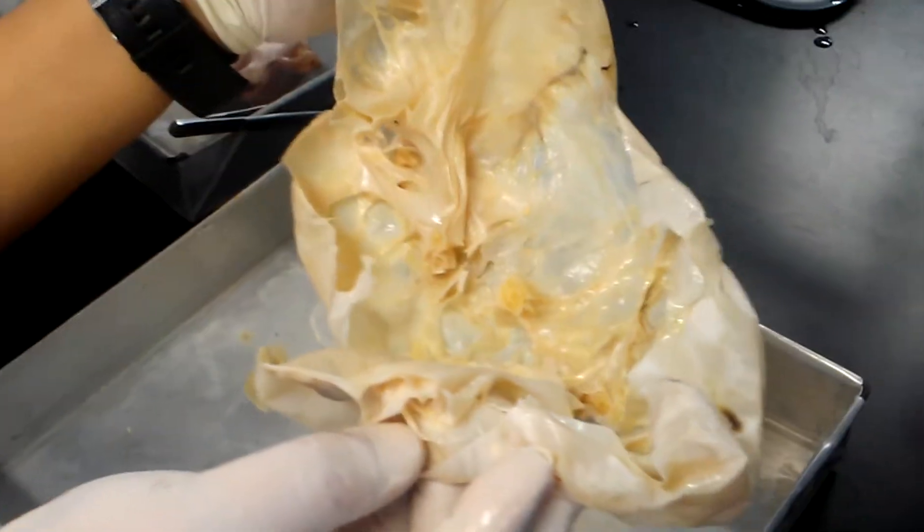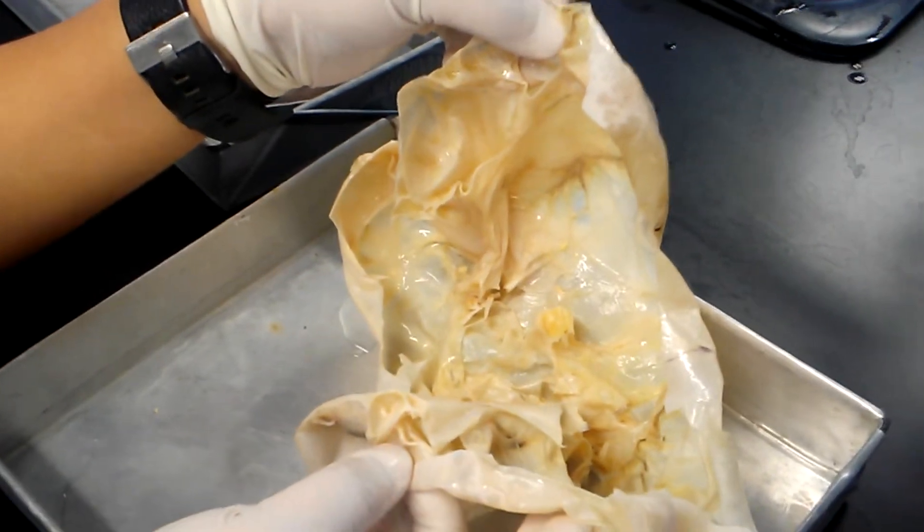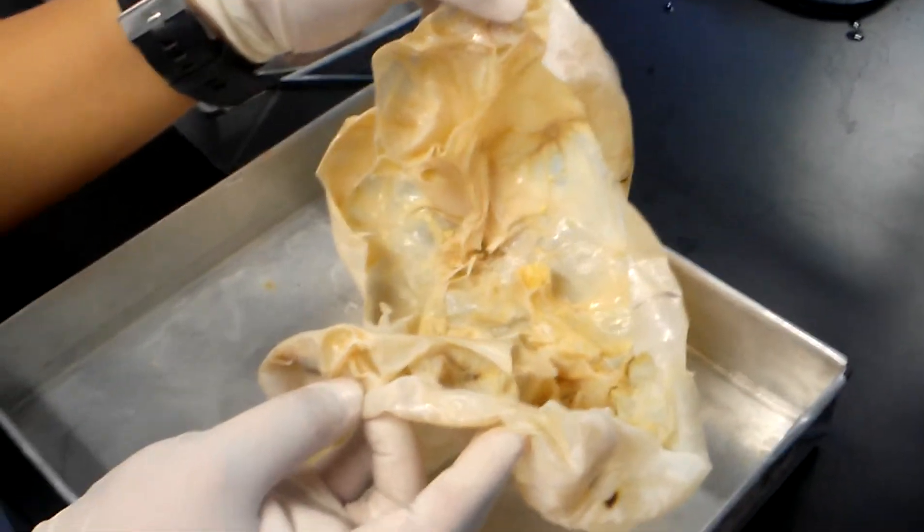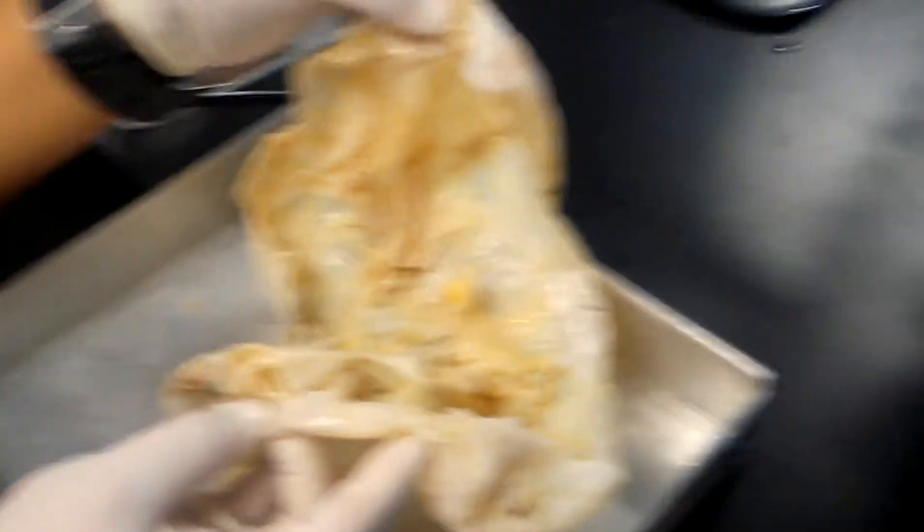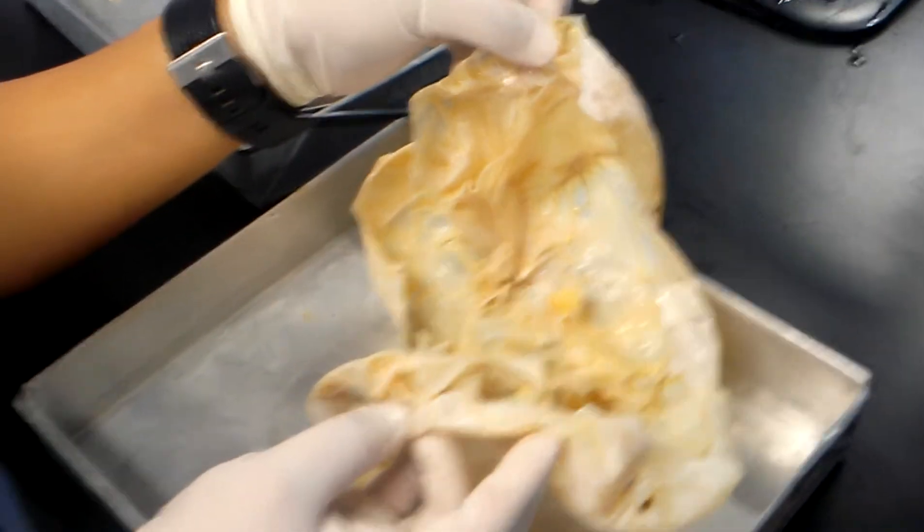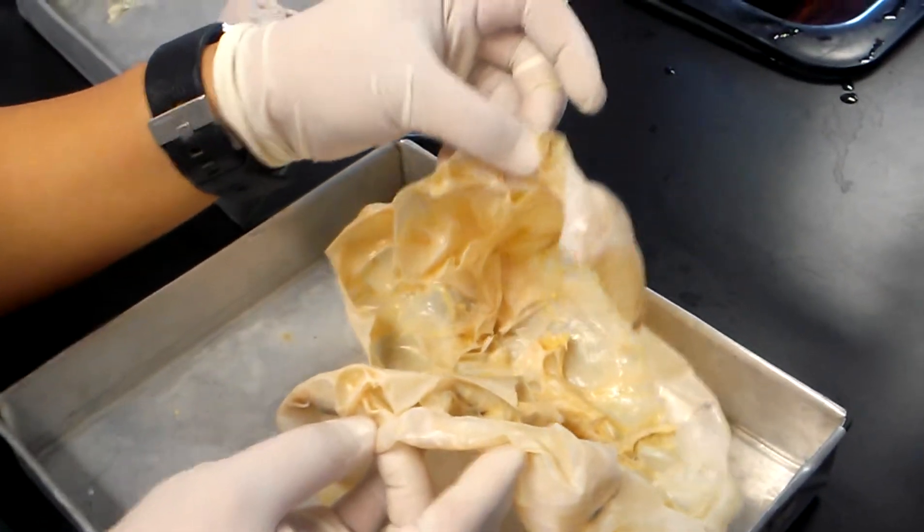And then when you section this one, in mucinous cyst you will see columnar epithelium with mucinous cyst. In serous, it's usually cuboidal or short columnar type of epithelium.